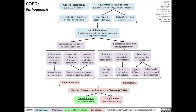The pathogenesis of chronic obstructive pulmonary disease starts with both genetic susceptibility and environmental insults. Genetic susceptibility includes hereditary disorders such as alpha-1 antitrypsin deficiency. These genetic disorders reduce the lungs' ability to prevent damage to lung tissue. Simultaneously, environmental insults to the lungs occur, such as long-term smoking, pollution, or infection. These factors create free radicals in the lungs and also inactivate lung antiproteases.